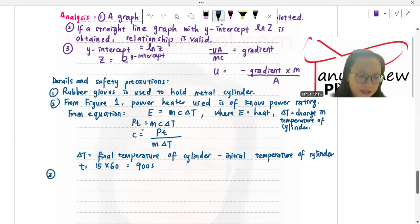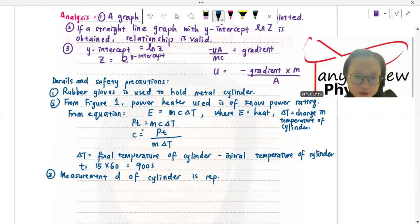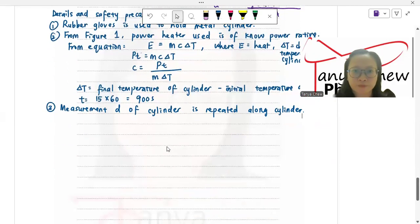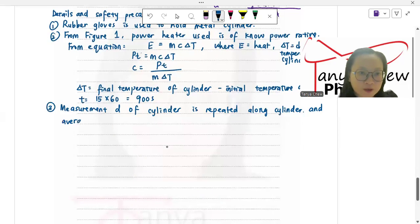And the third one, you might want to say that measurement of D of cylinder is repeated along the cylinder. You know why? Because sometimes the cylinder is not exactly 100% smooth. So you just want to make sure that your result is more accurate by doing so. And average.